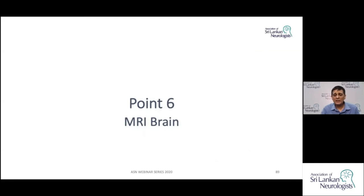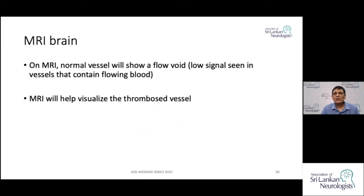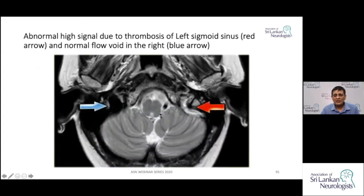On MRI brain, a normal vessel shows a flow void — a low signal seen in vessels where blood is flowing. If blood flow stops as in thrombosis, the thrombosed vessel appears differently. Here is an MRI image showing a hypointense flow void on one side where blood is flowing normally, while on the other side you can see the sigmoid sinus which is thrombosed — the thrombosis within the vessel is visible.